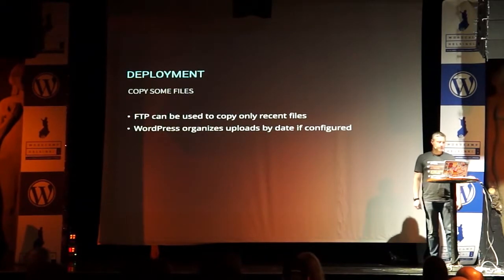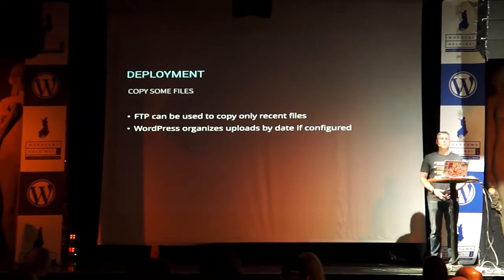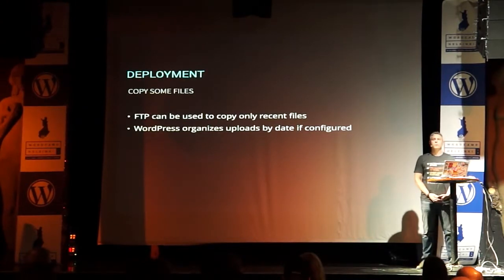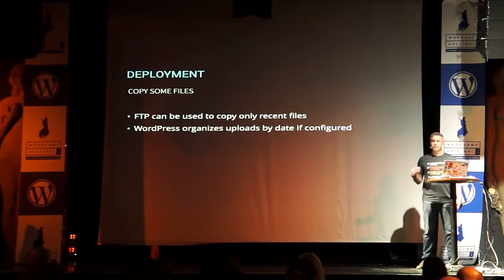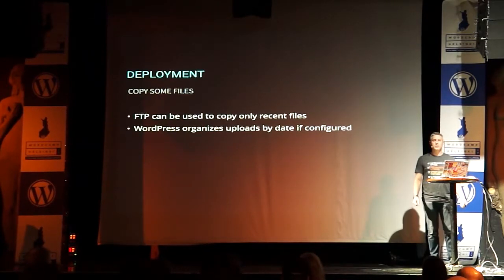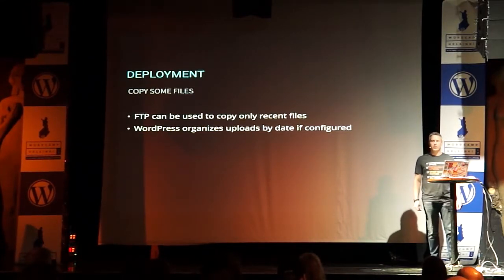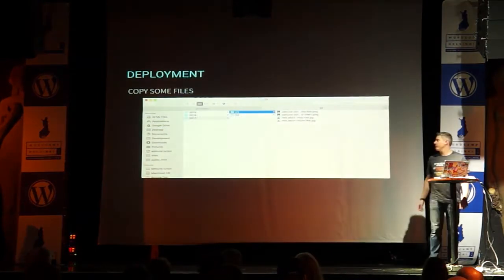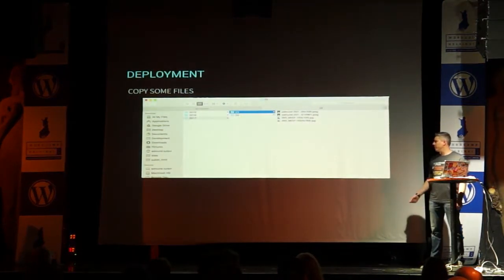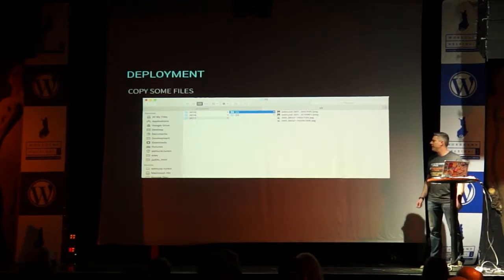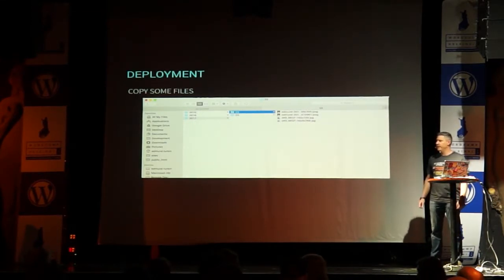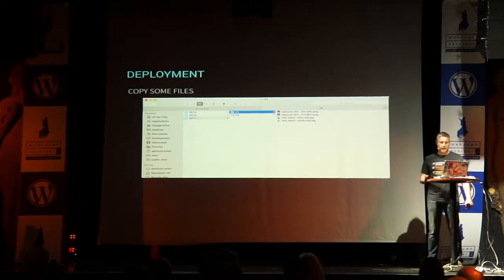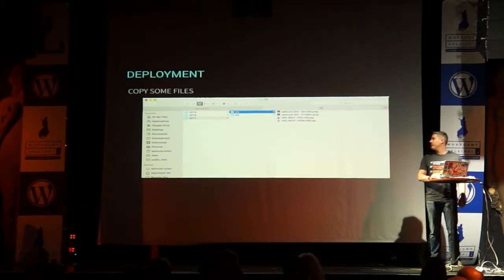WordPress has a great feature that organizes uploads in folders by year and by month. So if you only wanted to download everything from 2017, that would be simple — just grab the folders for the months you need and pull that down to your local. For deployment, if you want to copy only a few files, this makes it very easy to target just what's changed.